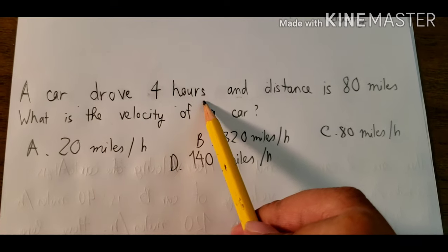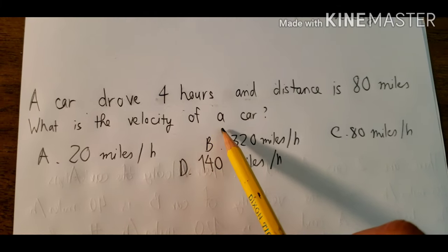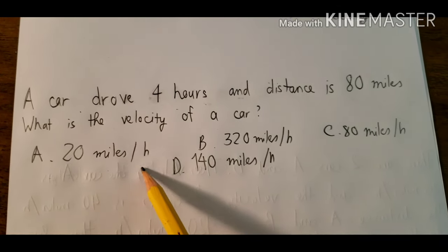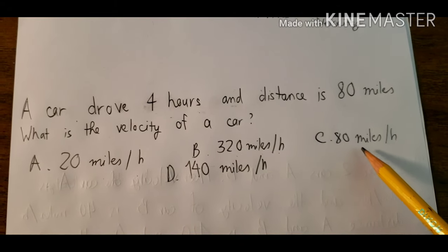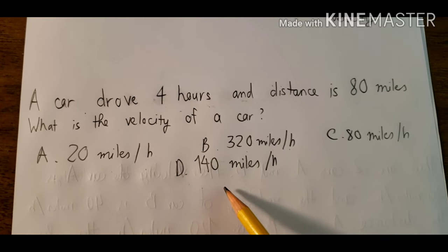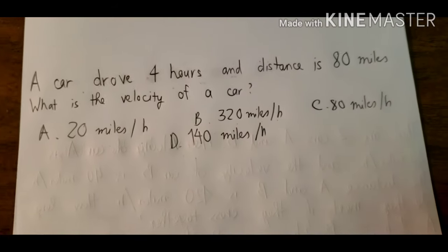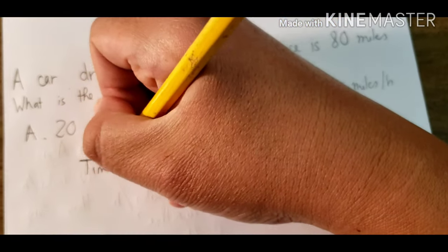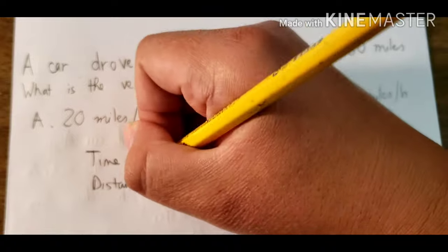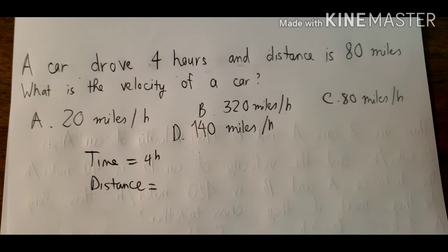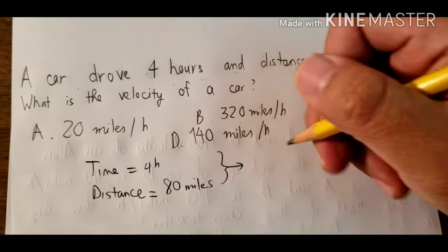Now I'll begin some basic questions. A car rode for 4 hours and the distance is 80 miles. What is the velocity of the car? We have options: A is 20 miles per hour, B is 320 miles per hour, C is 80 miles per hour, and D is 140 miles per hour. In this question, we have the time and we have the distance, which is 80 miles.